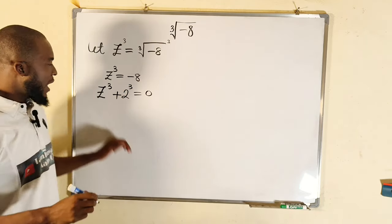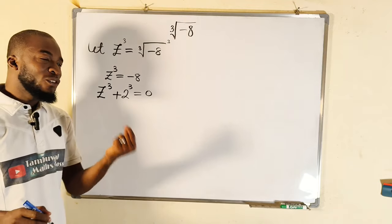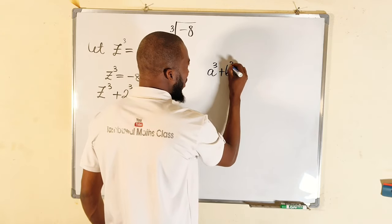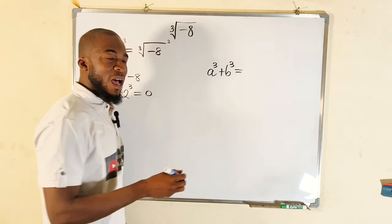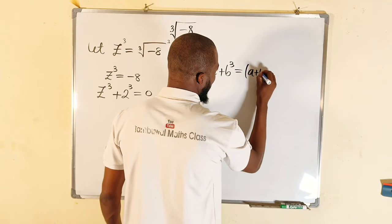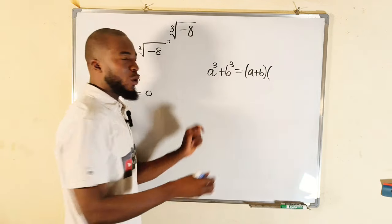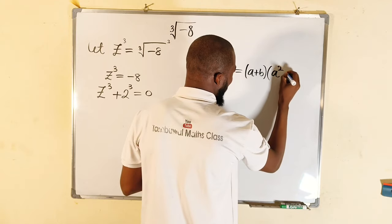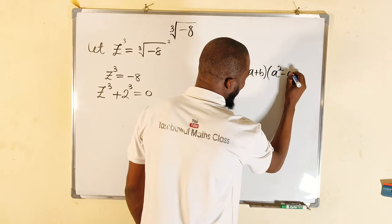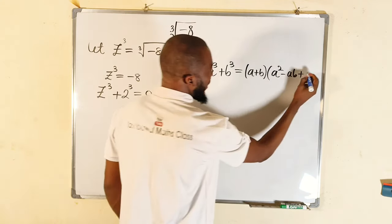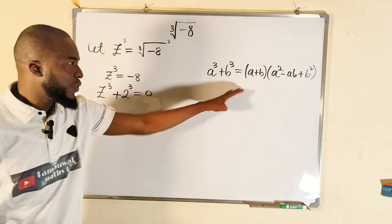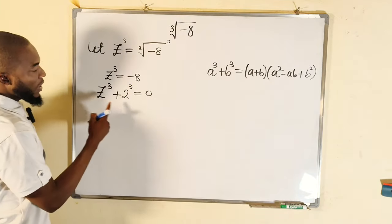So we have z cubed plus two cubed, which is nothing but a sum of two cubes. If you have a³ + b³, this can be factorized as (a + b) multiplied by (a² − ab + b²). We can apply the same principle here, where a is z and b is two.